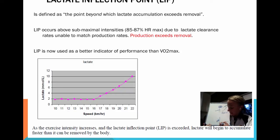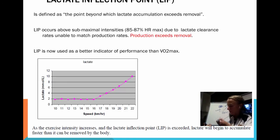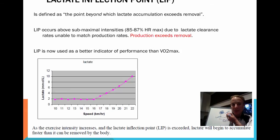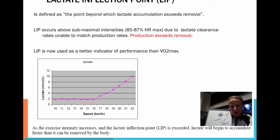The lactate-intensity relationship is not linear. A linear relationship — for example, heart rate and intensity — means as intensity increases, heart rate increases proportionally. But with LIP, once you hit that point where accumulation of lactate exceeds removal, we get an exponential graph. That's when we know the athlete has reached their LIP and will very soon fatigue due to the accumulation of metabolic byproducts.